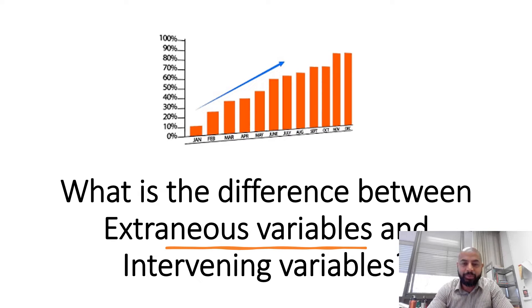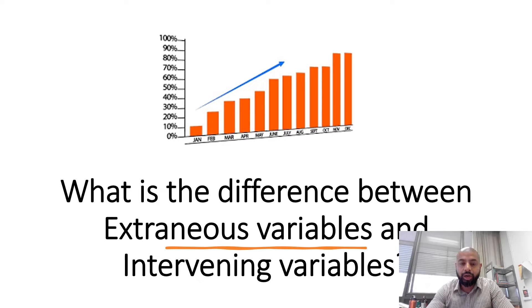Hi everyone. In my previous video, I took an example of a causal relationship to show the difference between a dependent variable and an independent variable, and also how extraneous variables play a role. The link to that video is in the description section below.